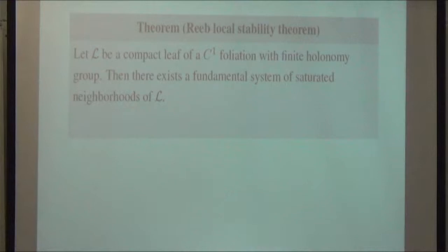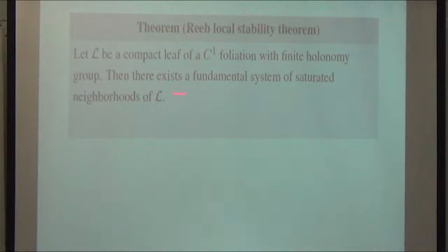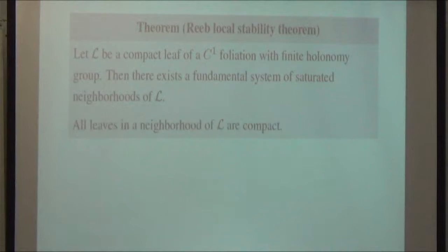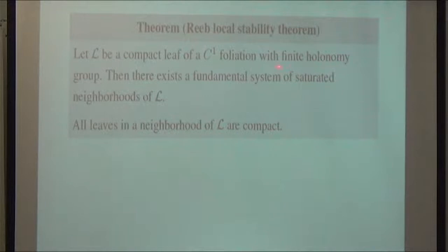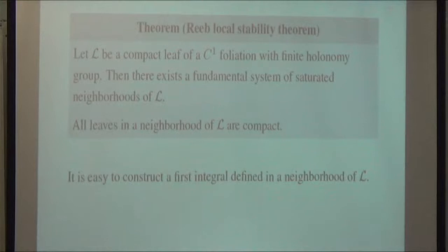A well-known theorem in the theory of foliations is that if you have a compact leaf of a C¹ foliation that has finite holonomy group, then there exists a fundamental system of saturated neighborhoods of the leaf — saturated means the neighborhood is a union of leaves — and all leaves in a neighborhood are compact. We are going to come back to this later in a situation where we will not require so strong a condition as the holonomy group being finite.